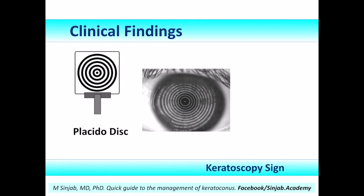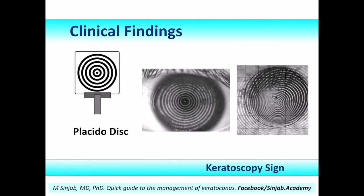The keratoscopy sign: the Placido disk is used to detect the shape of the anterior surface of the cornea. The rings of the Placido disk are projected onto the surface of the cornea, and the first Purkinje image of these rings reflects the shape of this surface. As we see in the image in the middle, the rings are concentric, central, and regular, reflecting a normal cornea. While in the image on the right, the cornea is distorted — the rings are crowded in some places and separated in others, reflecting the anterior surface of a keratoconic cornea.